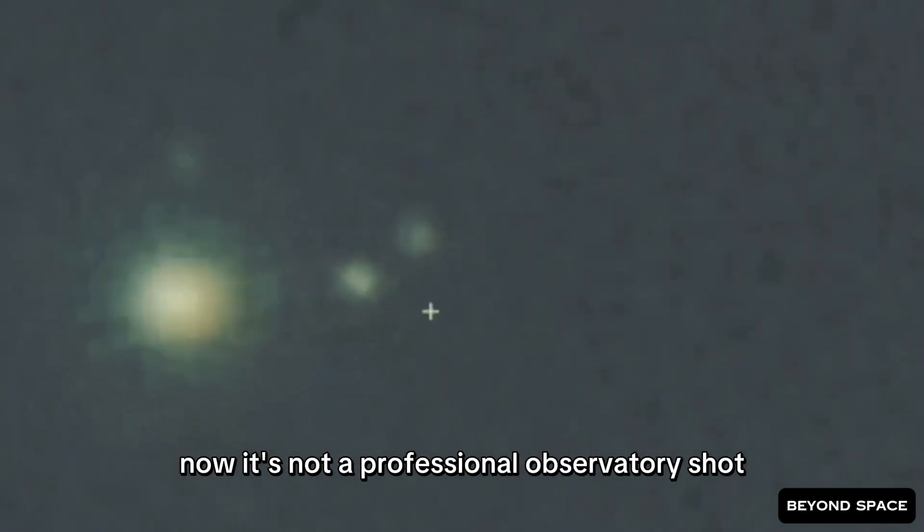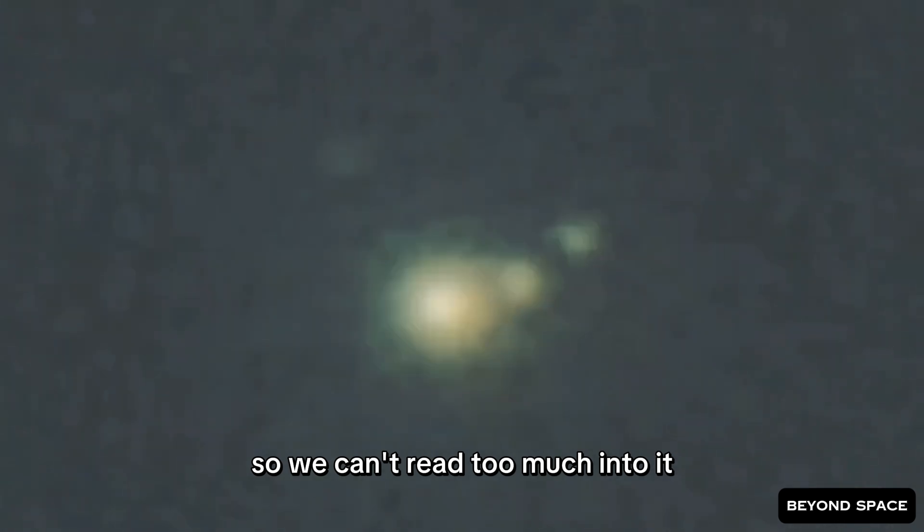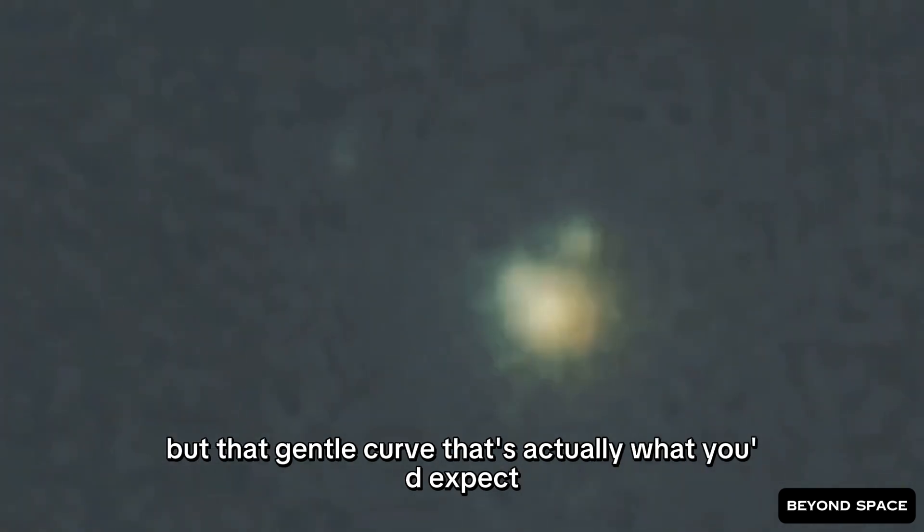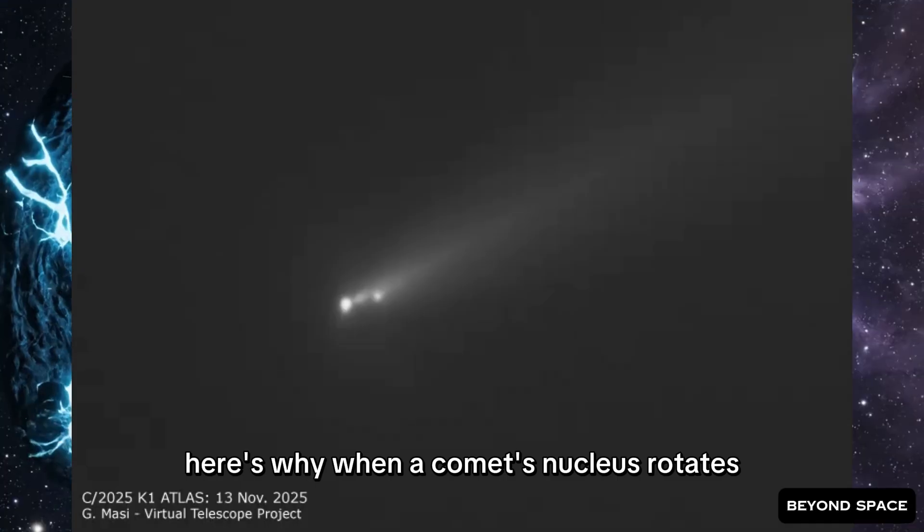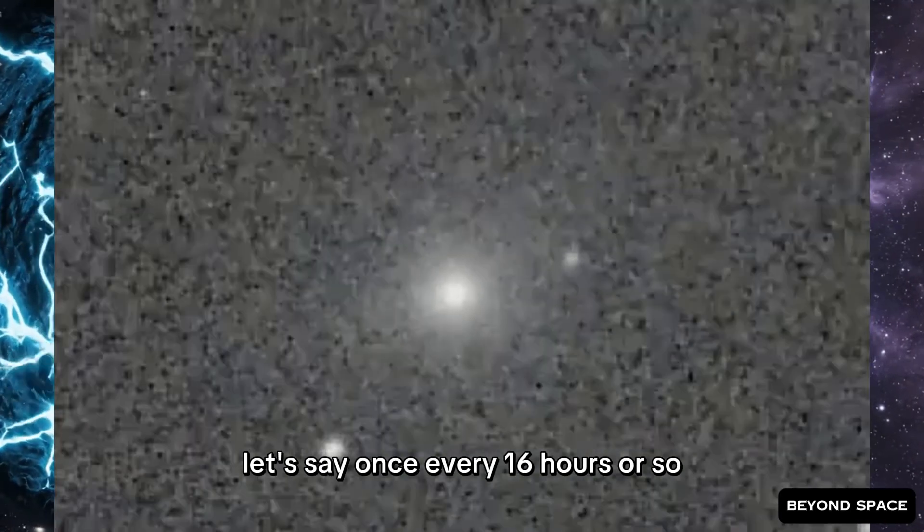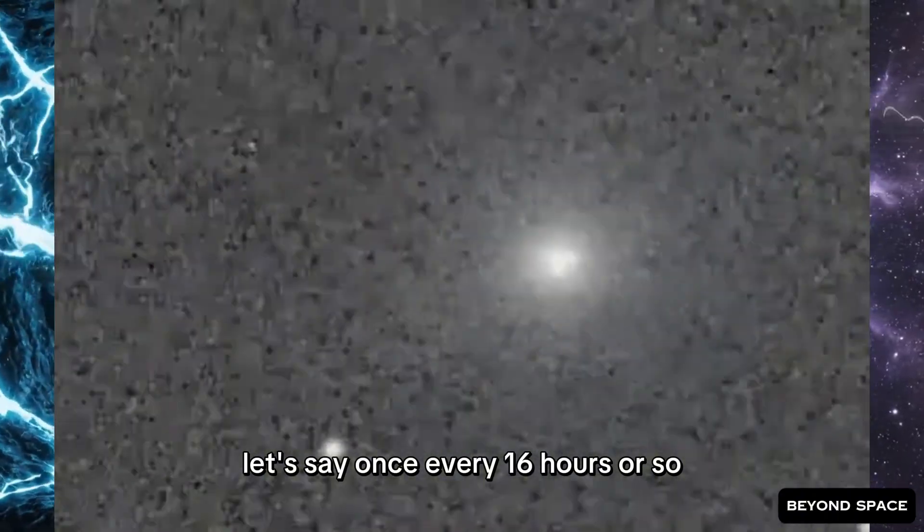Now, it's not a professional observatory shot so we can't read too much into it. But that gentle curve? That's actually what you'd expect if the nucleus is spinning. Here's why. When a comet's nucleus rotates, let's say once every 16 hours or so,